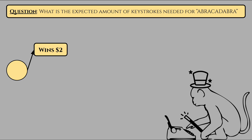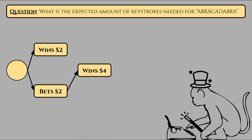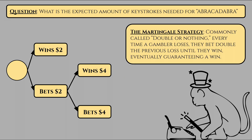Then the martingale strategy goes as follows: every time Alice bets and loses, her next bet should be double the amount of her previous loss. For instance, if she bets one dollar and loses, she should bet two dollars on the next coin flip. If she loses again, then she could bet four dollars, and so on. The idea is that if we keep doubling the bet sizes after each loss, the infinite monkey theorem tells us that it would eventually be guaranteed to hit a heads, meaning Alice would win all of her money back plus an additional dollar of profit.